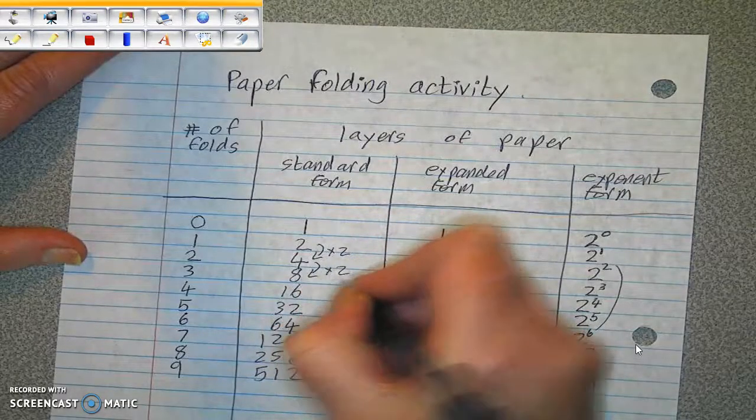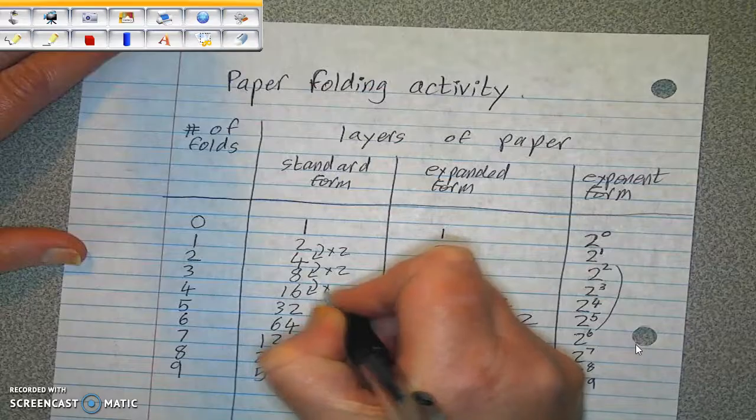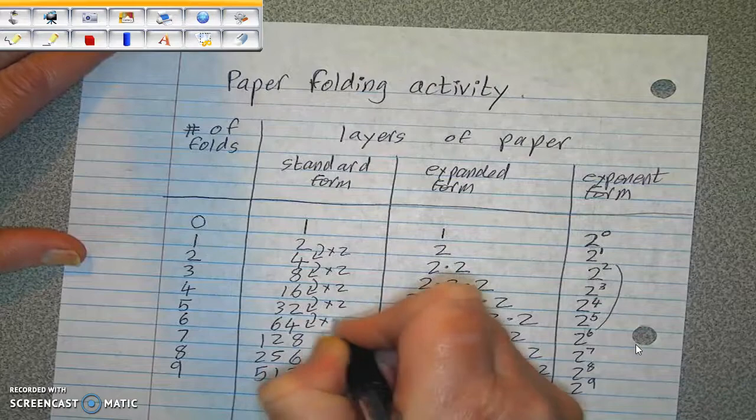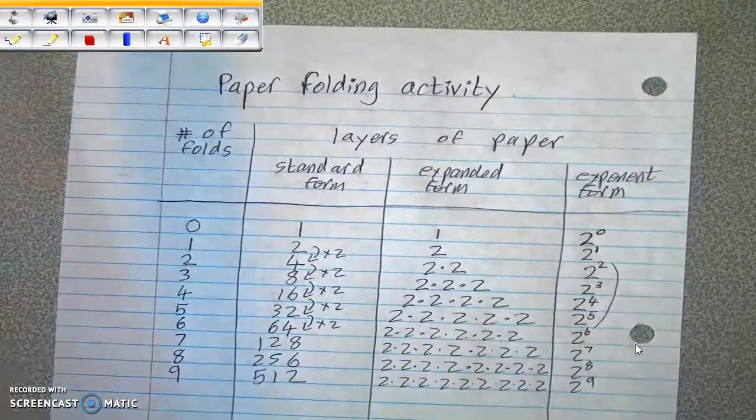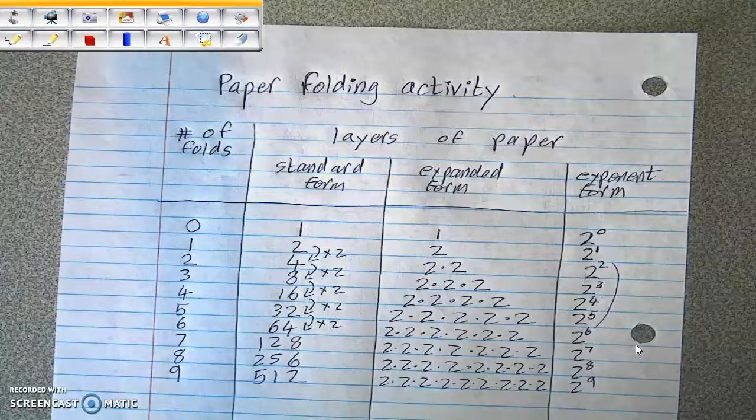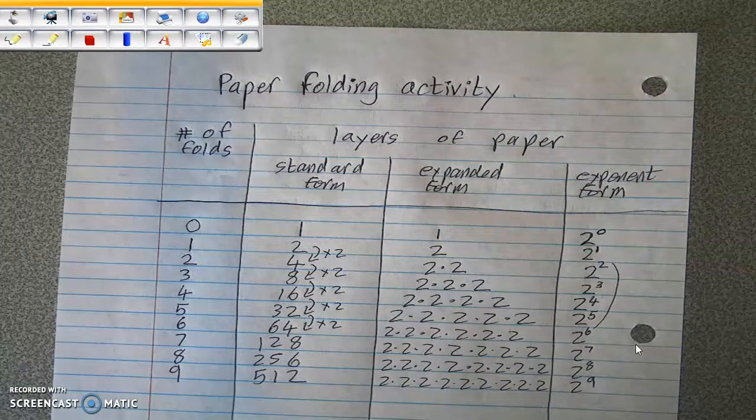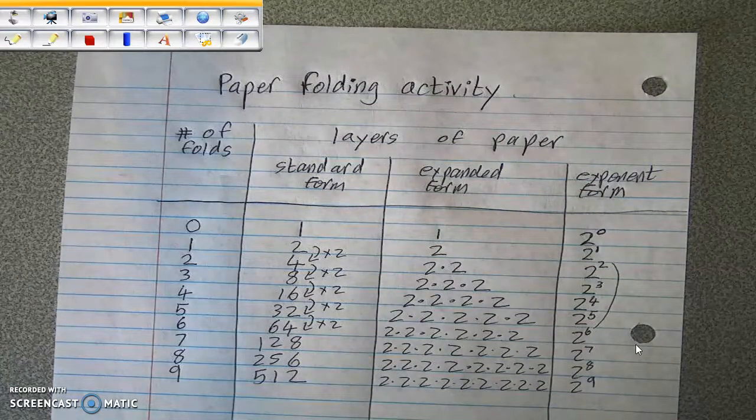Each time as you go along, you're multiplying by 2. Each time as you come down, you are multiplying by 2. And you can see how quickly the numbers grow. This is called exponential growth. And it goes up much, much quicker than regular multiplication.